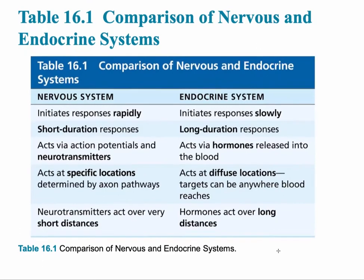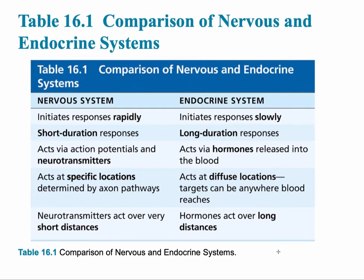This table shows a comparison between the nervous system and the endocrine system. The nervous system works very rapidly — it can take milliseconds. Whereas the endocrine system responds very slowly and takes much longer. The nervous system produces short duration responses, but the endocrine system produces long duration responses.